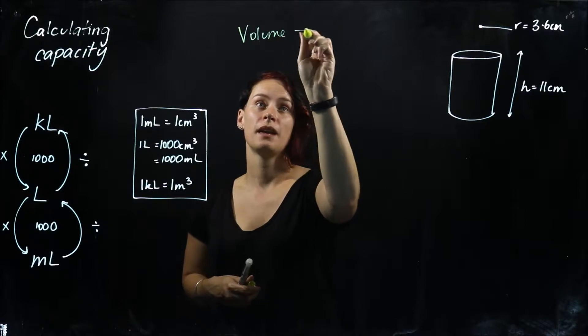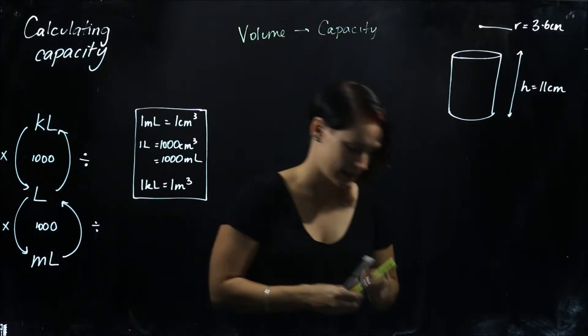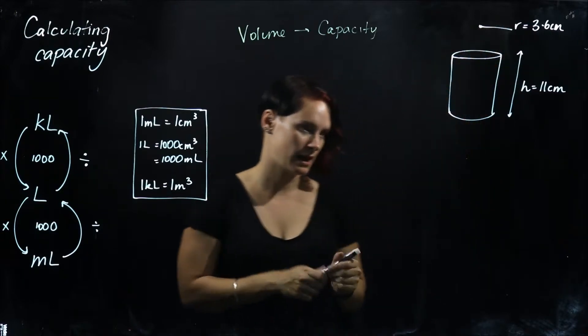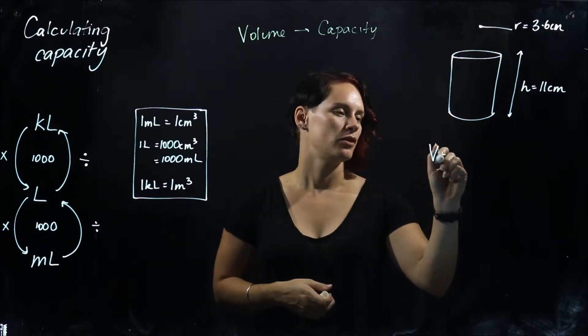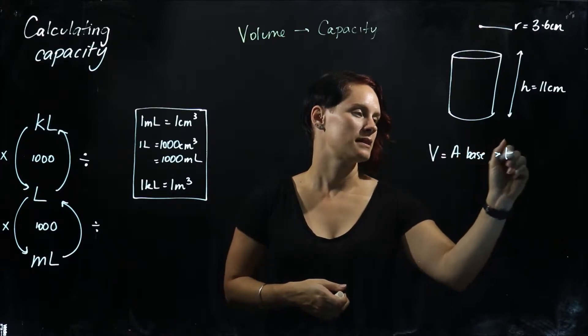Find the volume and then you can find the capacity. Let's have a go. So I've got all my measurements there. I need to remember that my volume is going to equal area of the base times the height.